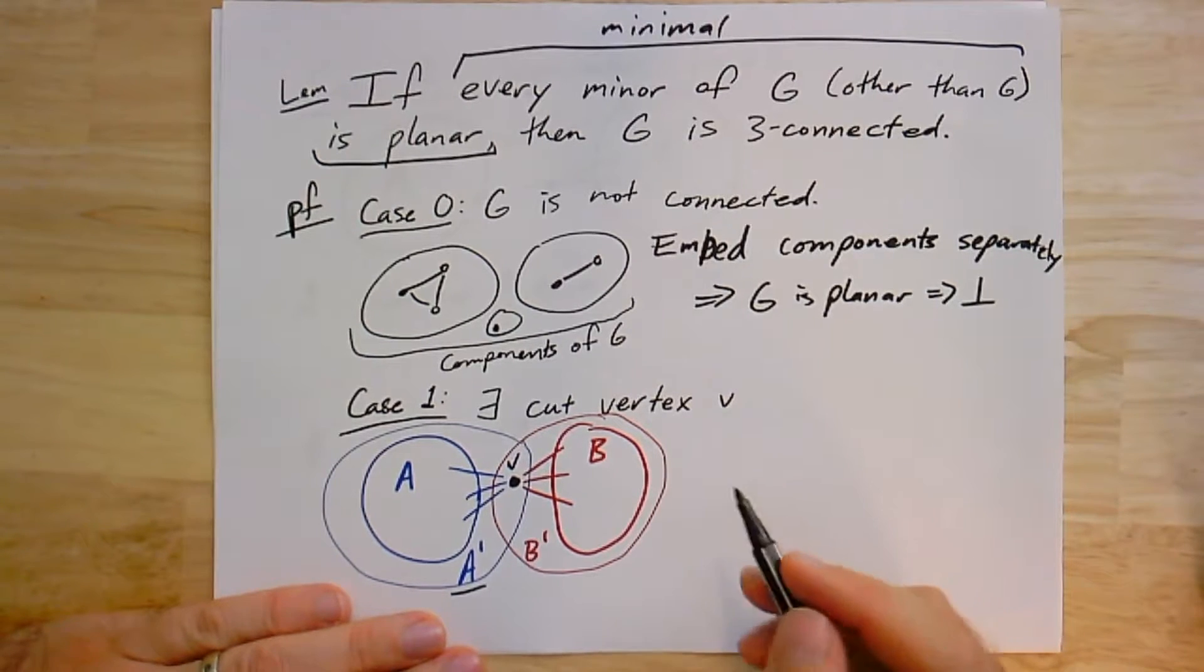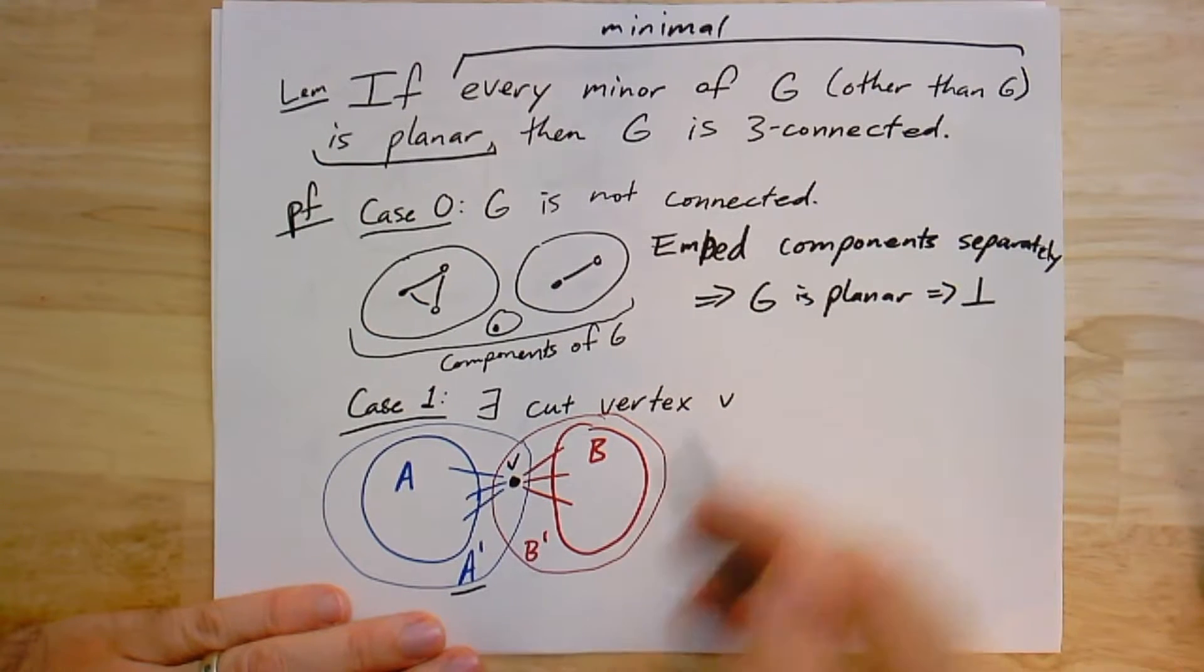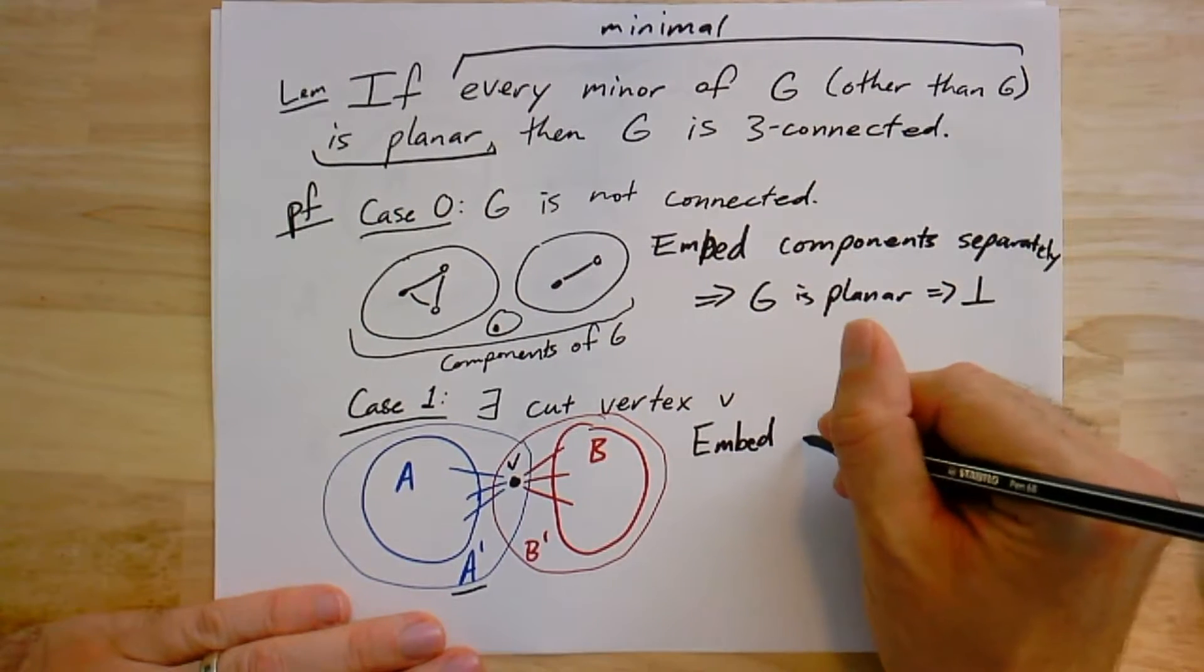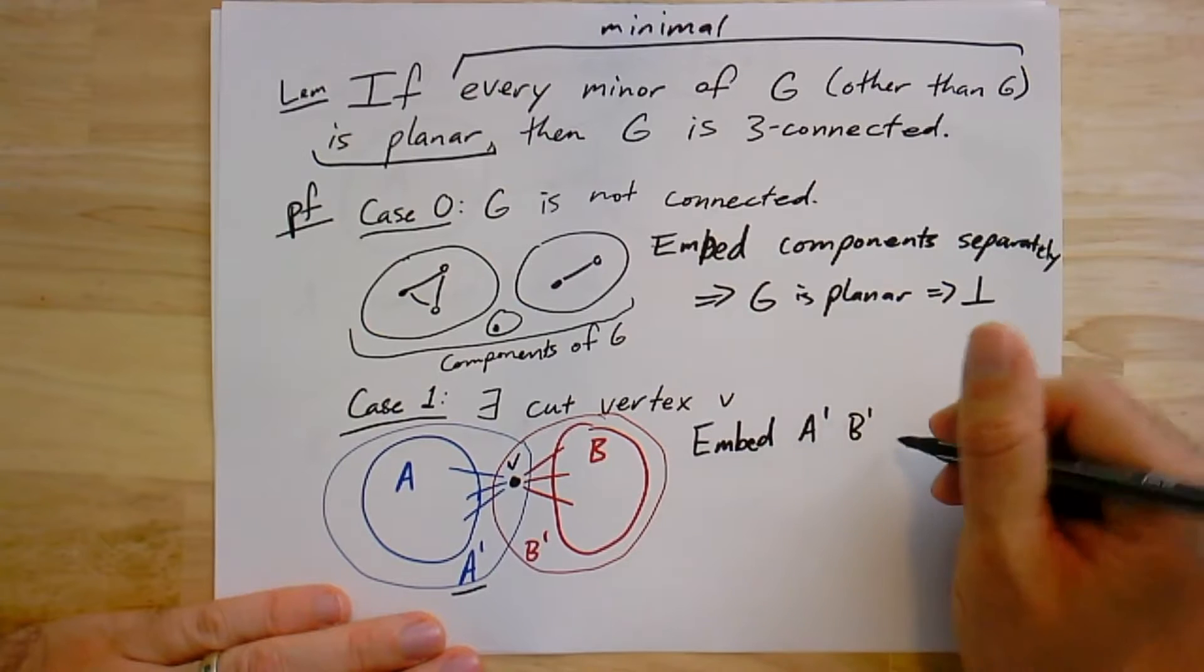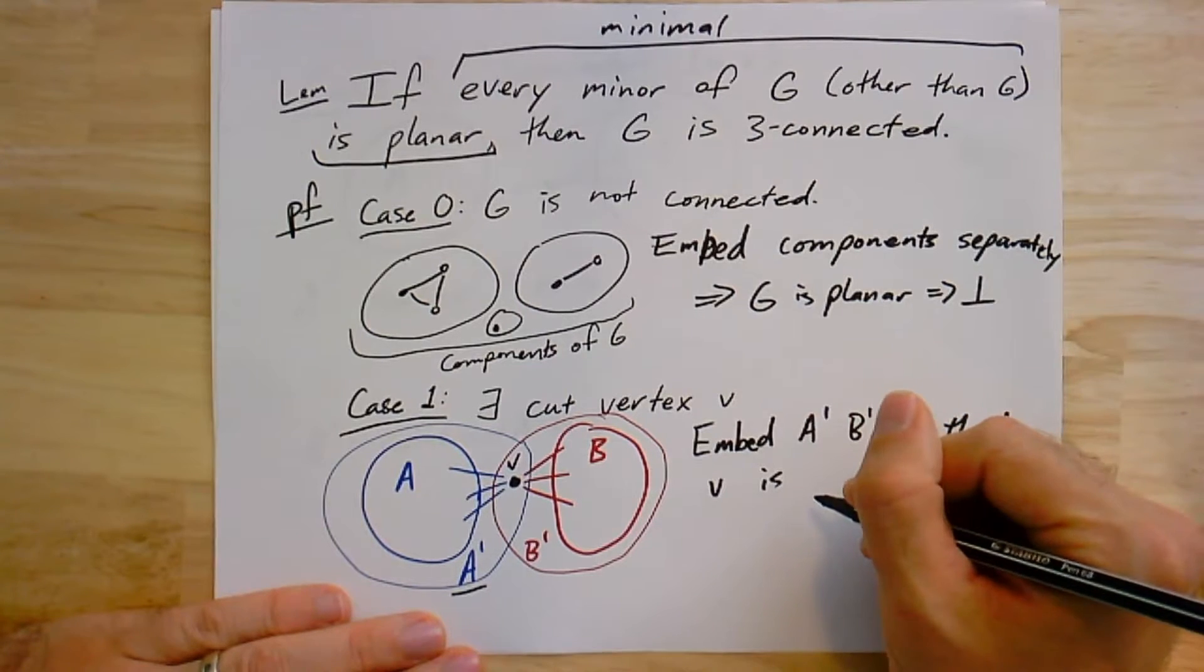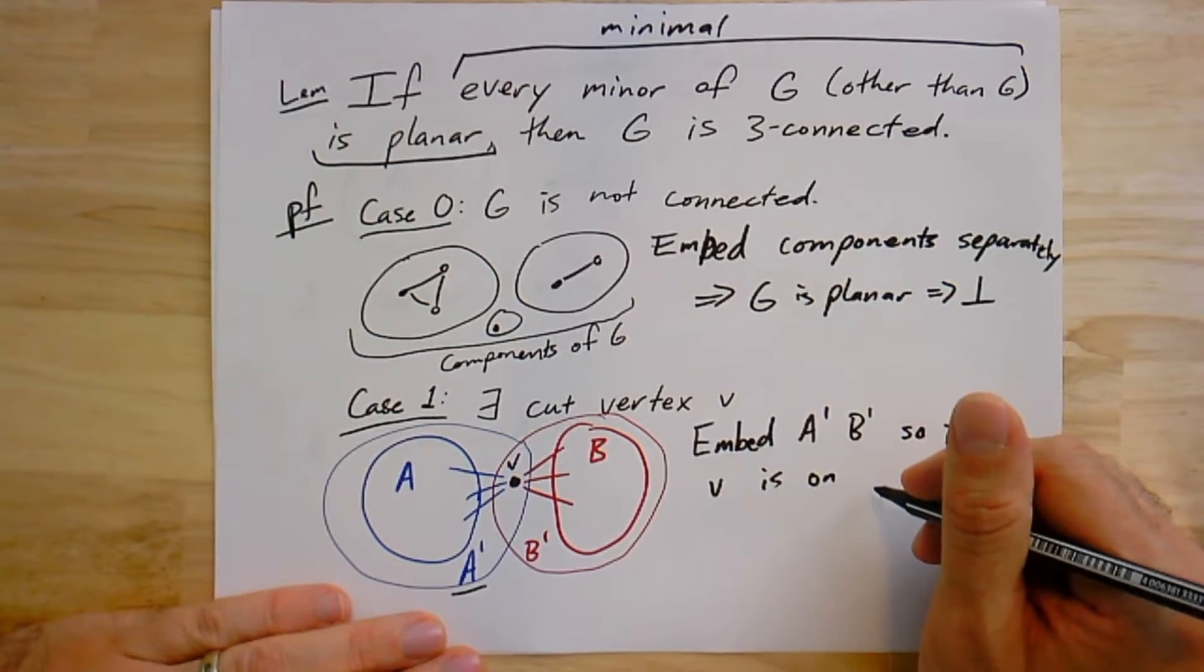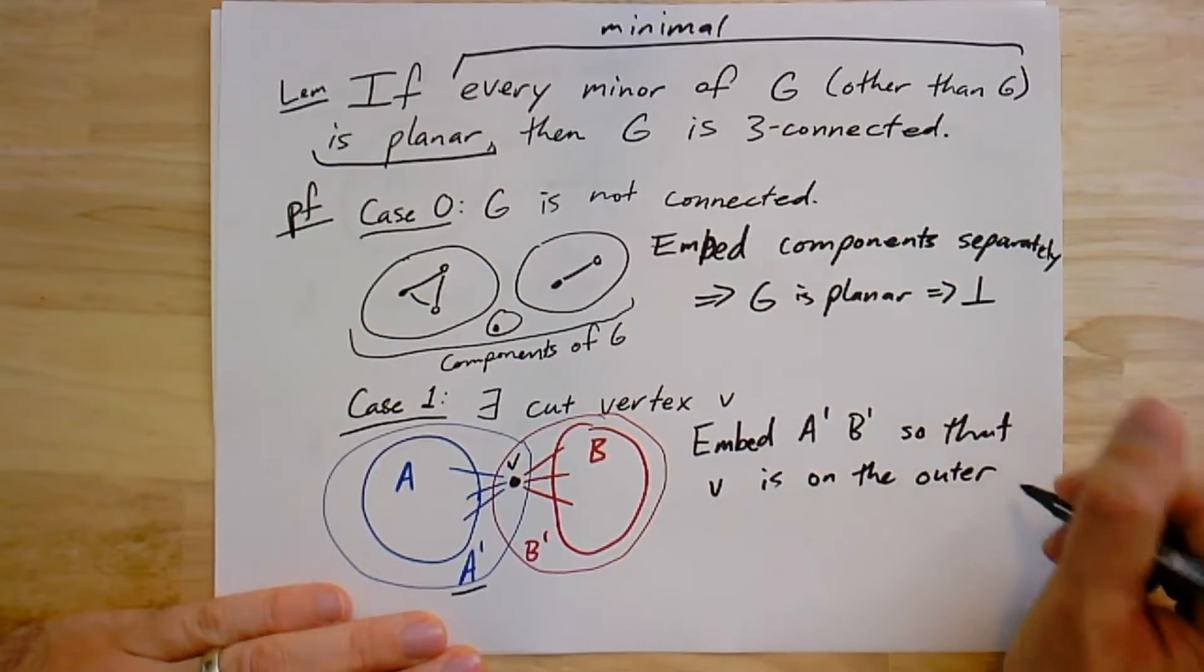Both of these are proper minors, that is, they're minors of G, but they don't equal G. And so both are planar. We can embed both A prime and B prime so that this vertex V is on the outer face. And we can do that using this stronger Fary's theorem we just used. If V is on the outer face, and in fact they're on a triangle, then I can just overlap the vertices V. I can glue these two embeddings together.